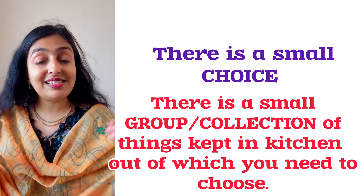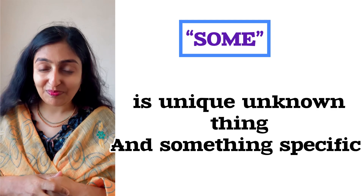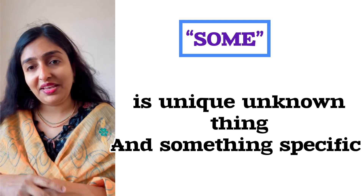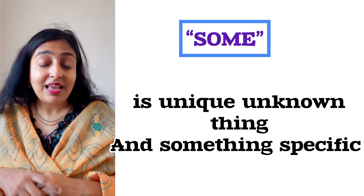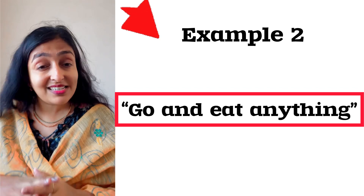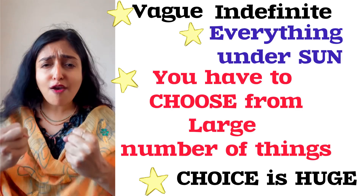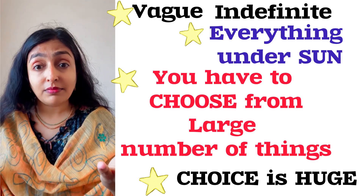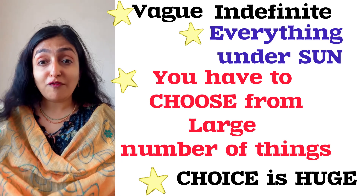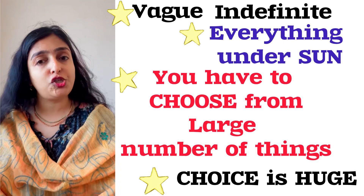The word 'some' means a unique, unknown but specific thing. Now the next example: go and eat anything. What does it mean? It is something vague, indefinite. 'Go and eat anything' involves everything under the sun — the choice is large. You have to select or choose from a large number of things.